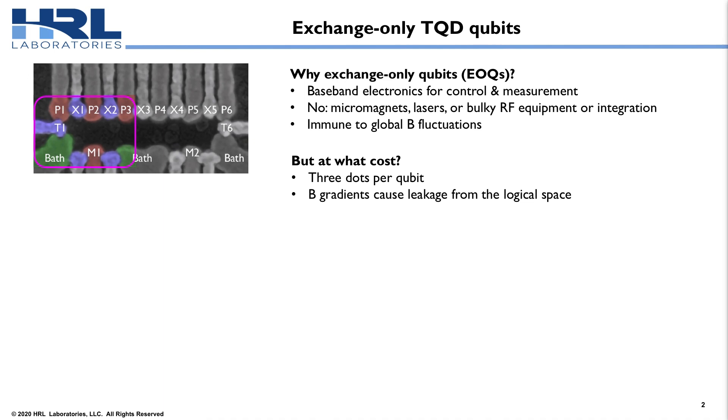Now, there's some cost to that. I've got a microscope image of two exchange-only qubits here. You can see that's six dots in a row, and that means we need three dots for each qubit. So, that's an overhead cost. Secondly, because we're going to be encoding our two-dimensional qubit in a larger space, we can leak out of that logical space. In particular, that's going to be driven by magnetic field gradients.